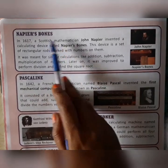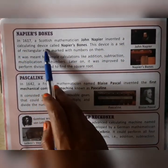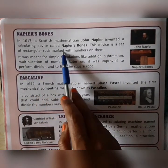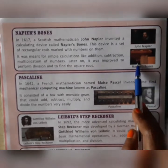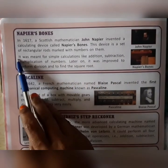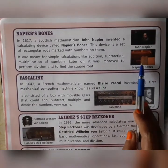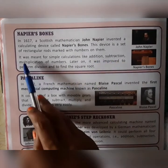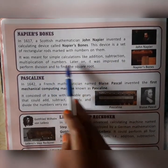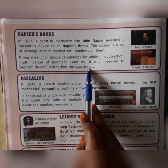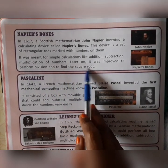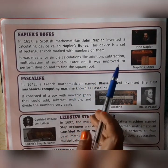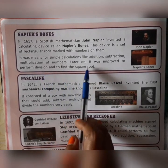In 1617, a Scottish mathematician John Napier invented a calculating device called Napier's Bones. This device is a set of rectangular rods marked with numbers on them. Napier's Bones was developed for simpler calculations like addition and subtraction, but as time passed it was also improved to perform division and to find square roots.